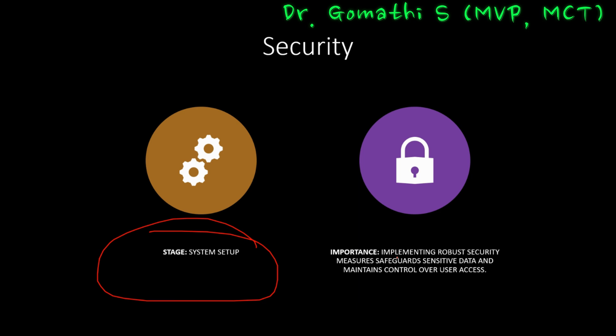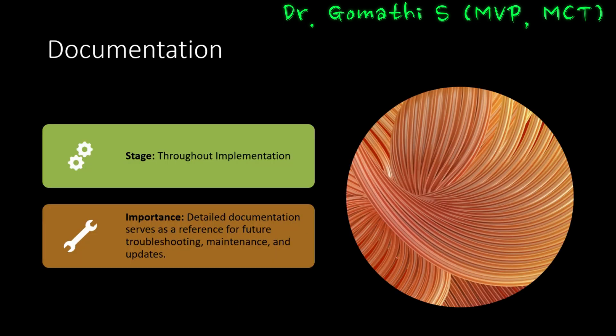Next comes security, which is also a system setup stage. Security is paramount in today's digital landscape; implementing robust security measures protects sensitive data and maintains control over user access. We review, assess, and implement a range of security measures to safeguard against unauthorized access, data breaches, and other threats. We establish user authentication protocols, access controls, and encryption mechanisms, ensuring the system complies with industry standards and best practices, instilling confidence in users, clients, and stakeholders.